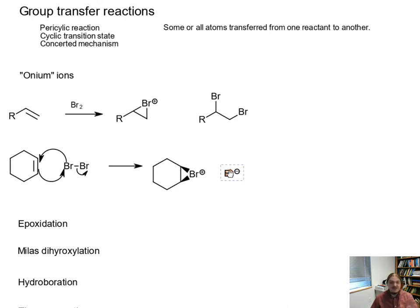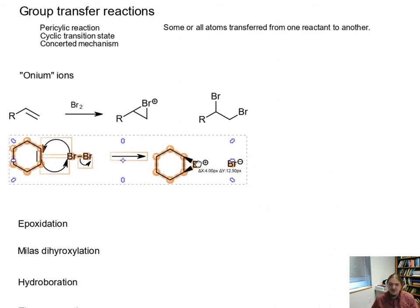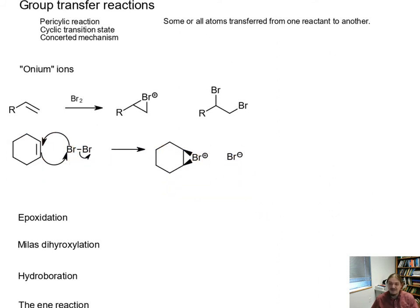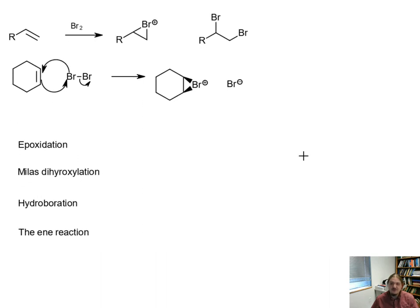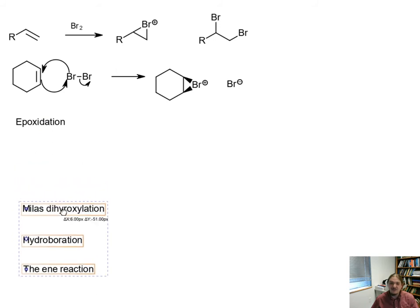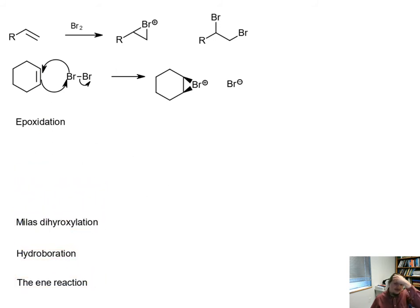And it's this first step of the reaction that's the group transfer reaction. The second step of the reaction is an SN2 ring opening kind of reaction. It's this first step that is a group transfer. One of the atoms bromine is transferred to the product but not all of the atoms in the reactant are transferred.